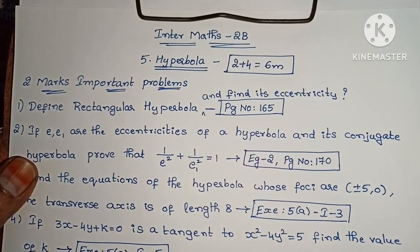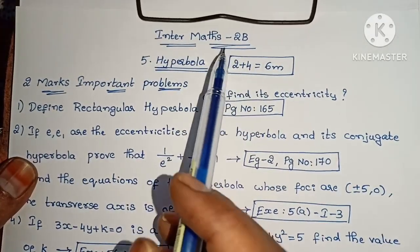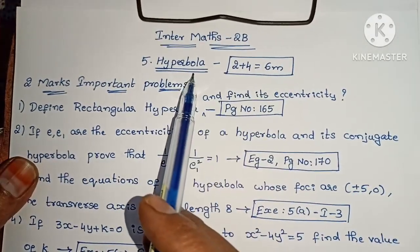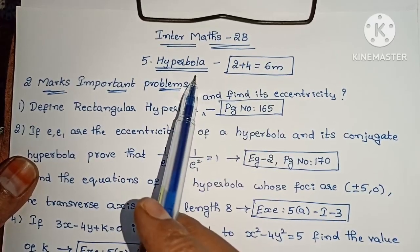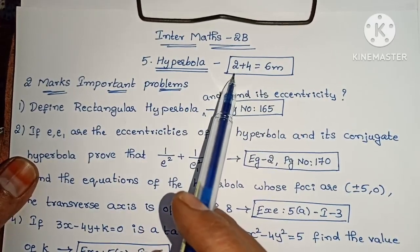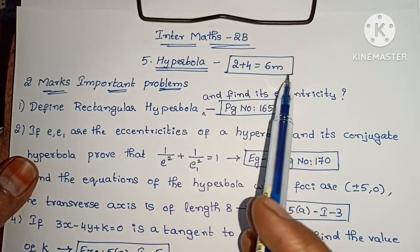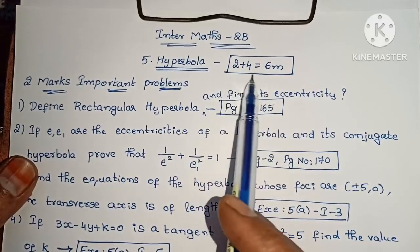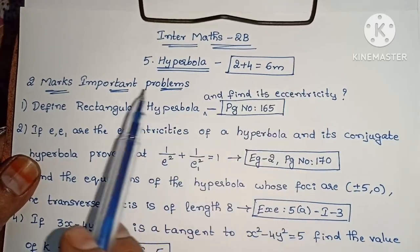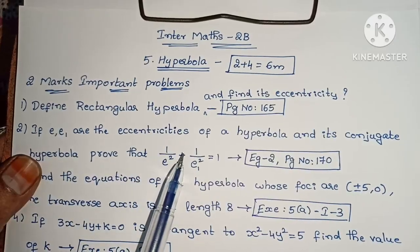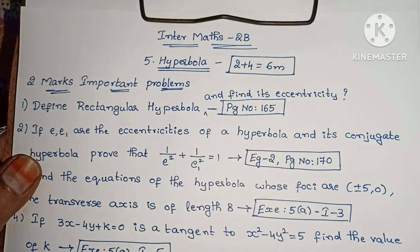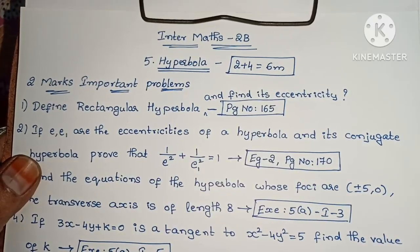Welcome to Parneka Maths. In the next video, we will discuss the 5th Chapter: Hyperbola. This chapter has important problems worth 2 marks and 4 marks, for a total of 6 marks. First, we will discuss the 2-mark important problems — the questions and their solutions. We will open the link in the description below.